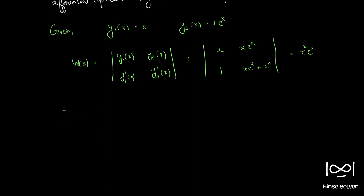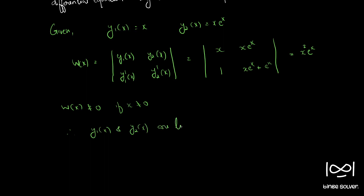We can see that the Wronskian is not equal to 0 for x not equal to 0. So in the interval minus infinity to infinity, W(x) is not identically equal to 0, meaning not every x makes W(x) equal to 0. Therefore, y1(x) and y2(x) are linearly independent.